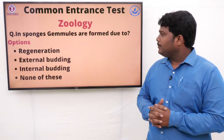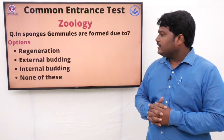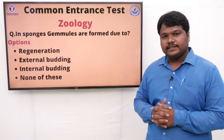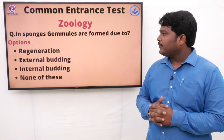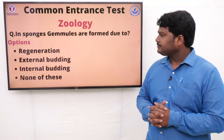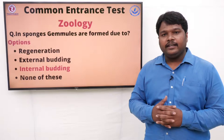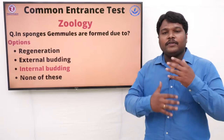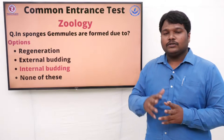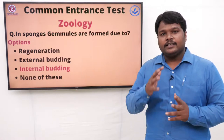Question 7: In sponges, gemmules are formed due to. Options: A) Regeneration, B) External budding, C) Internal budding, D) None of these. The answer is internal budding. Sponges have gemmules, and those gemmules are formed in the sponges due to internal budding. Internal budding is a special type of reproduction that takes place in sponges.